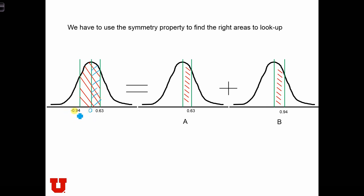What you need to realize is that the area between negative 0.94 and zero is equal to the area between zero and plus 0.94, since the curve is symmetric.